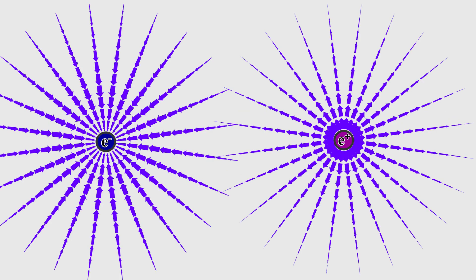A stationary charged particle creates only an electric field around itself. However, when the particle moves, a magnetic field arises due to the time-varying electric fields surrounding it.